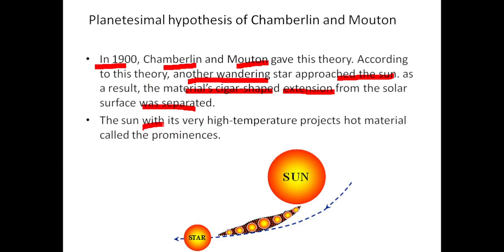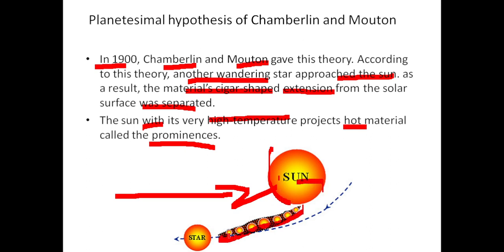The sun with its very high temperature projects hot material called the prominences. As the wandering star tried to approach the sun, the sun emitted hot materials and these materials were separated from the sun.